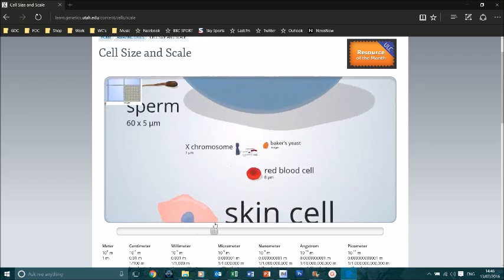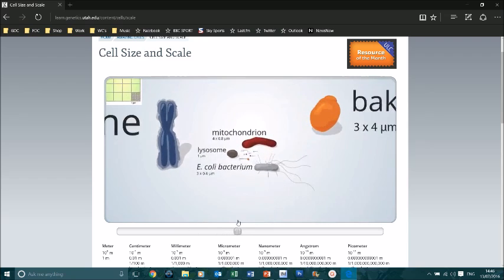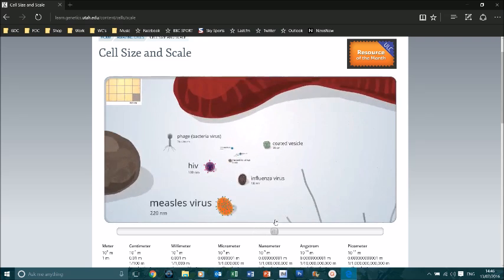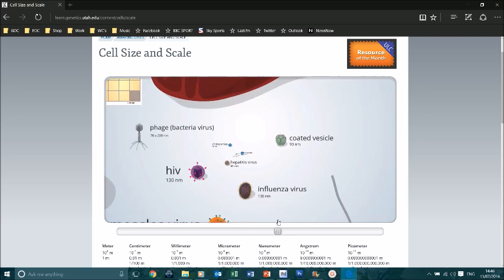We go down to the red blood cells, down to chromosomes, down to bacteria, we're getting smaller and smaller and smaller. So, then you get down to HIV, which is in nanometres.